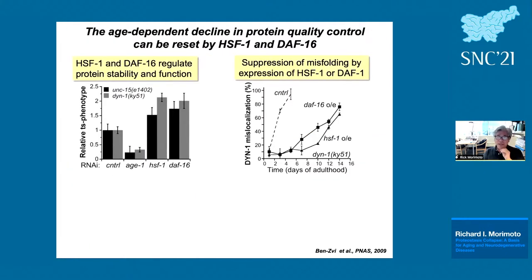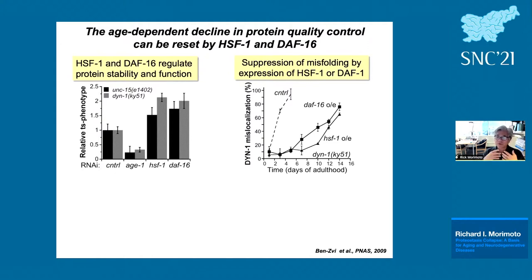This suggested that by manipulating chaperone systems and controlling transcription factors, we could shift the quality control of folding. Knocking out HSF-1 or DAF-16 — the transcription factors essential to proteostasis in aging — by RNAi enhanced the ts phenotype by about twofold. HSF-1 is the upstream transcription factor for most molecular chaperones, and DAF-16 is the upstream transcription factor for small heat shock proteins.